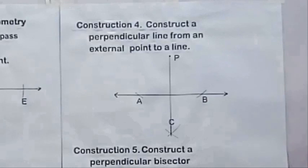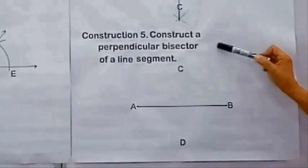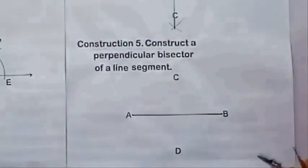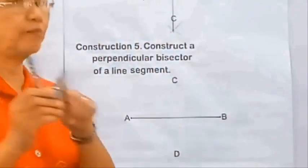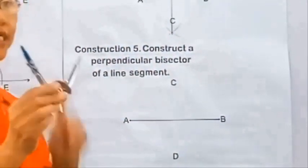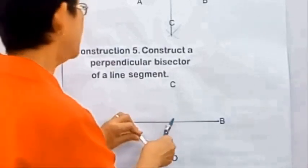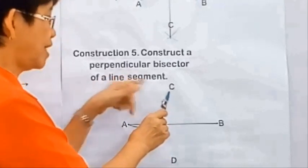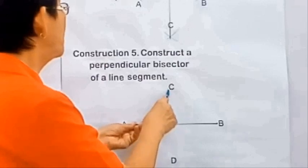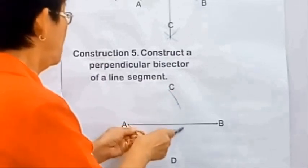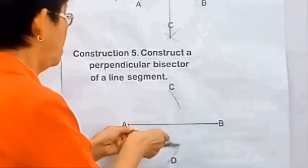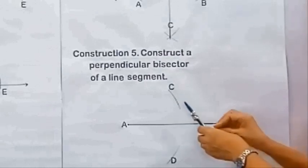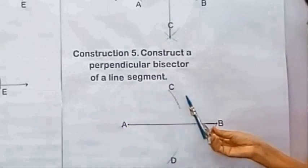The last construction is to construct a perpendicular bisector of a line segment. Line segment AB will be bisected. We adjust the opening of the compass to a little bit more than half of segment AB, then swing an arc above the line and below the line. We then place the compass point at B and swing an arc with the same opening as the arc from point A.